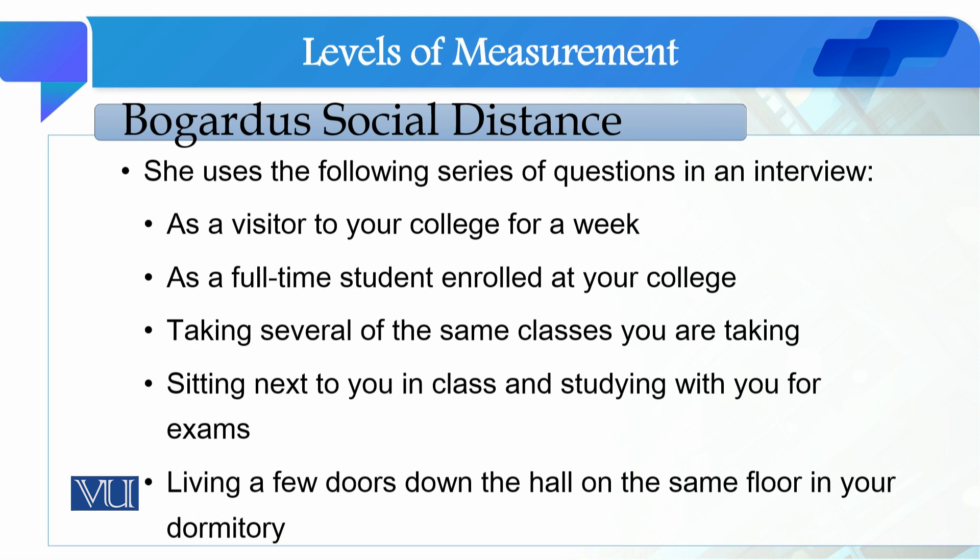They have to identify five items to use for different interactions. One of these interactions is: would you welcome this person as a visitor to your college for a week?